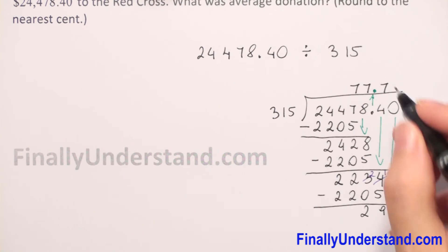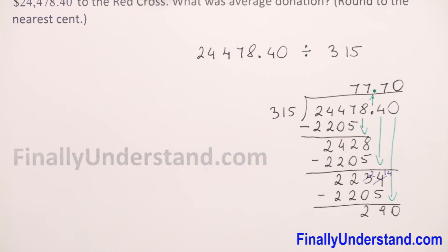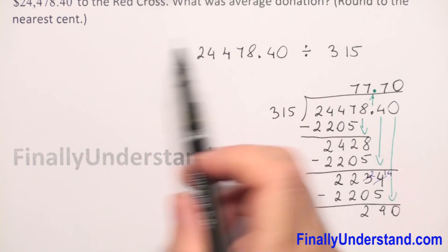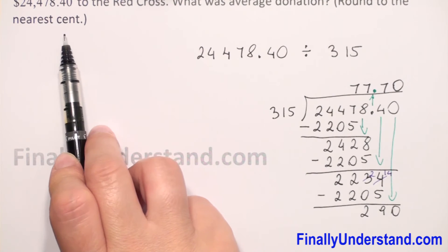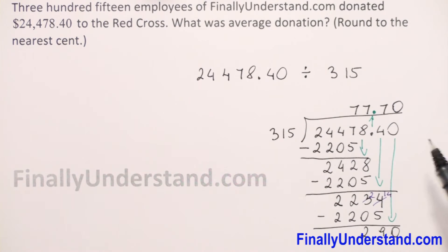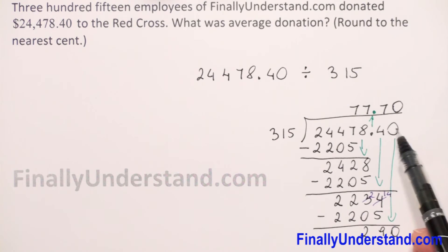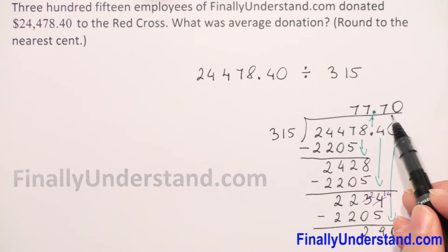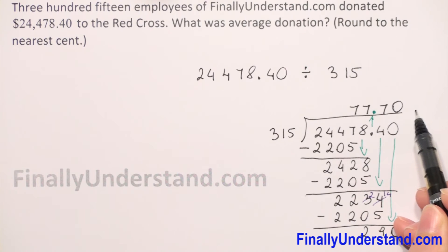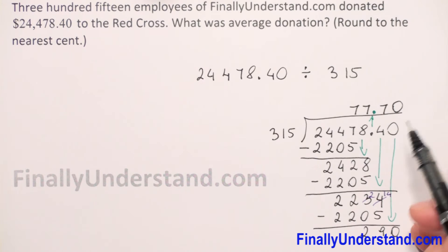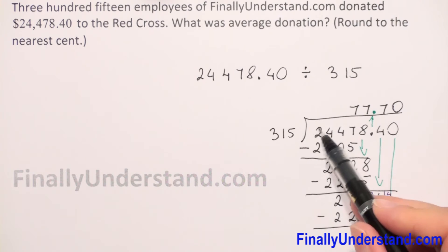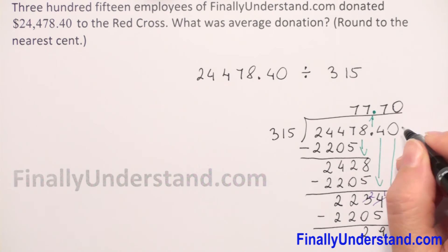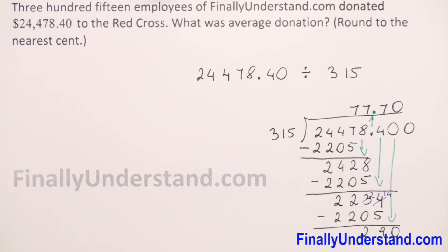290 divided by 315 is 0. We need to round to the nearest cent, so we need three digits after the decimal point — the second digit is the hundredths (cents) place, and we need one extra digit to do the rounding. So we add one more zero to the dividend.